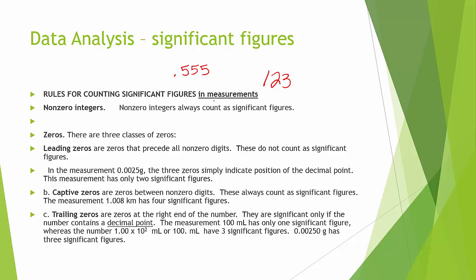Then we have zeros — zeros are kind of a pain. You have to know where the zeros are. Leading zeros are any zero before a non-zero digit — they never get to count. They're just placeholders. So a number like 0.0055 would only have two significant figures.